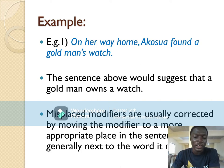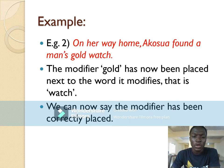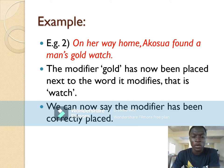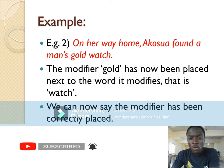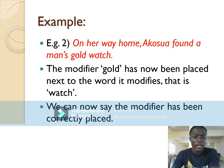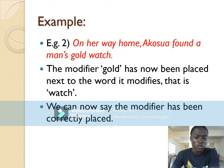To correct the example: 'On her way home, she found a man's gold watch.' What we did is move the modifier 'gold' next to the word it is trying to modify, which is 'watch.' The modifier 'gold' has now been correctly placed next to the word it modifies.